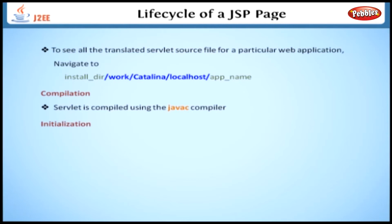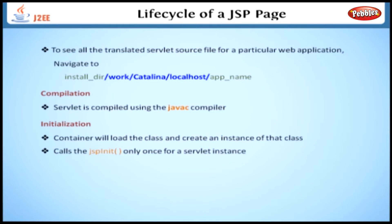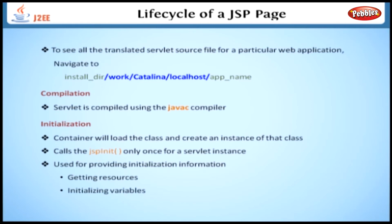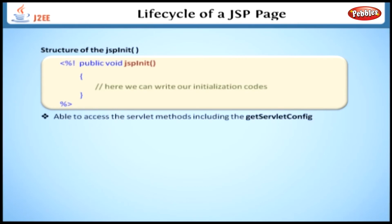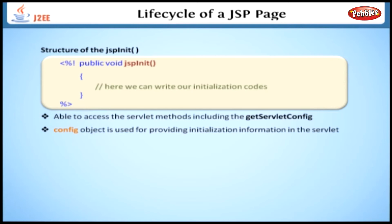After compilation, the container will load the class and create an instance of that class. Then the container calls the jspInit method only once for a Servlet instance. This method is used for providing initialization information such as getting resources and initializing variables used in the JSP page. Here is the structure of the jspInit method. While writing in JSP, we write it inside the declaration. Once we call this method, we are able to access Servlet methods including getServletConfig. Remember that the config object is used for providing initialization information in the Servlet.